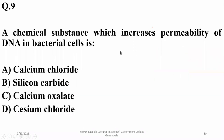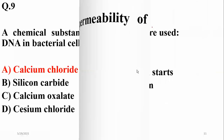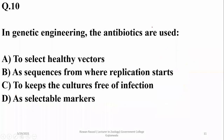Question number nine: a chemical substance which increases the permeability of DNA into bacterial cells is calcium chloride, alpha. In genetic engineering, antibiotics are used as selectable markers to select the desired plasmid.